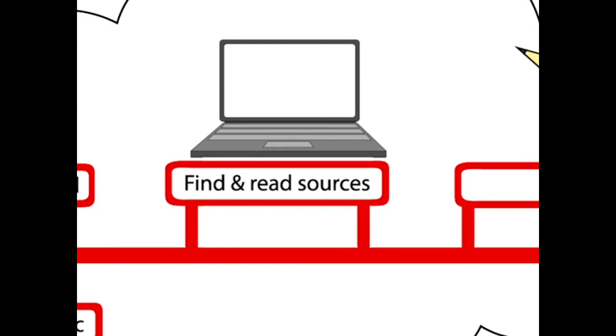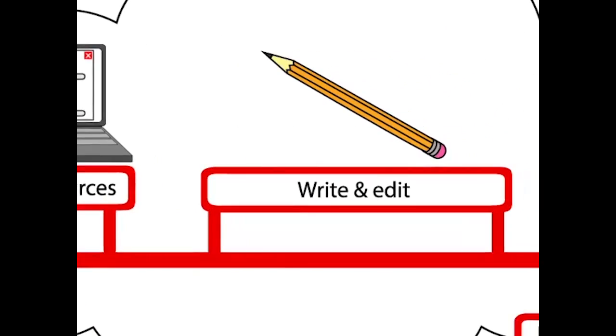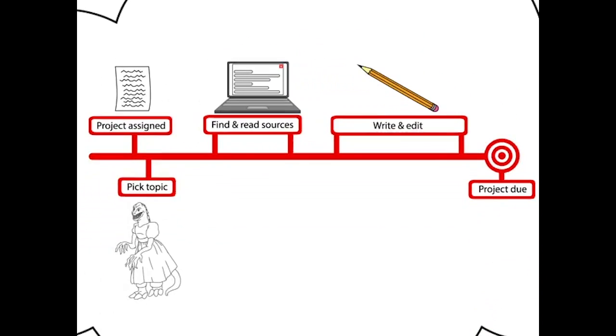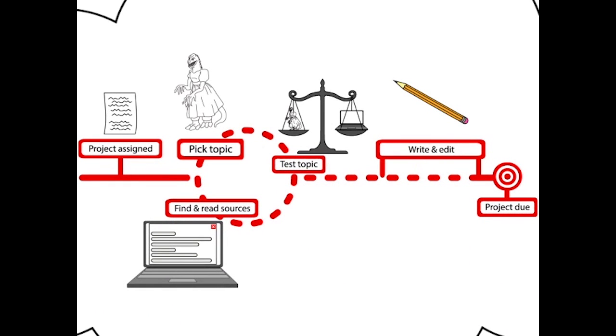Then she can move on to finding sources and reading through them, and once she has all her sources, she can start writing her paper. But the research process is a lot messier than that, and picking your topic is intertwined with finding and reading sources, and writing and editing your paper.